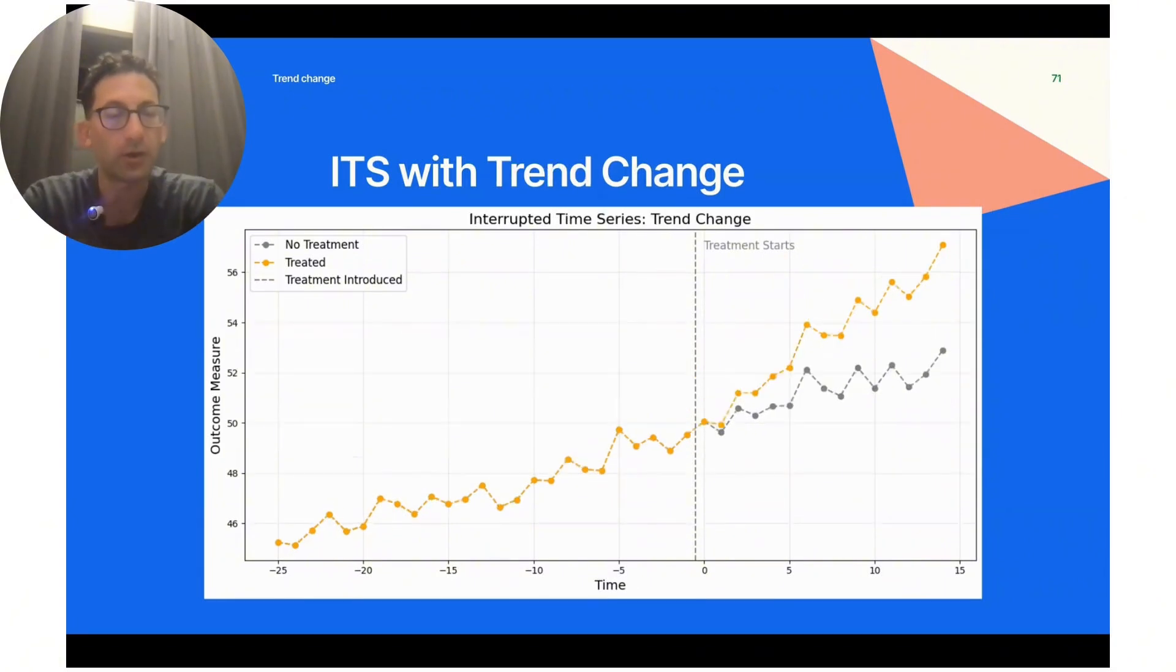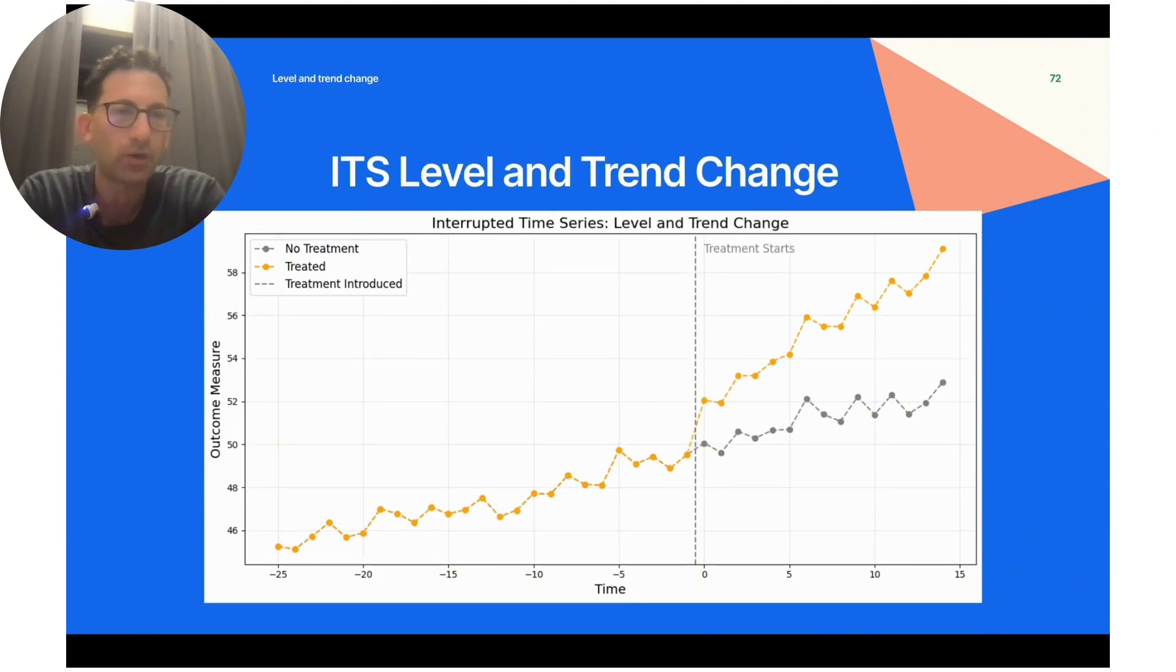There are other cases where your treatment may cause a trend shift. The gray line indicates the trend this population was on, then the treatment happens and it's on a higher or lower trajectory. You can have one or the other, or both—a level shift and a trend shift happening at the same time.